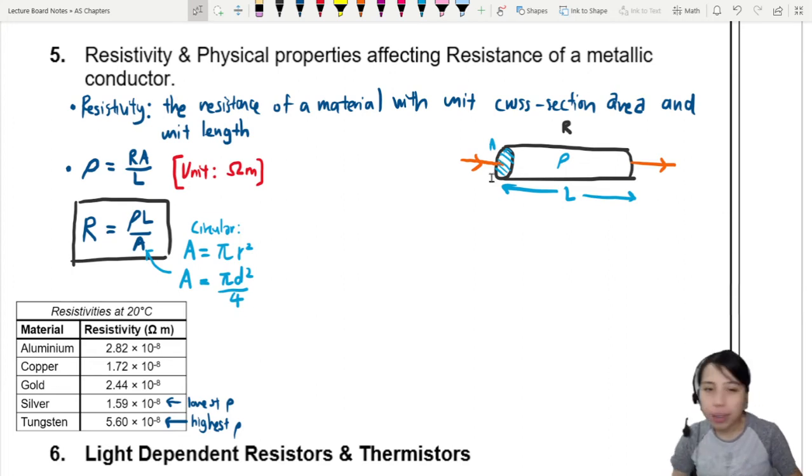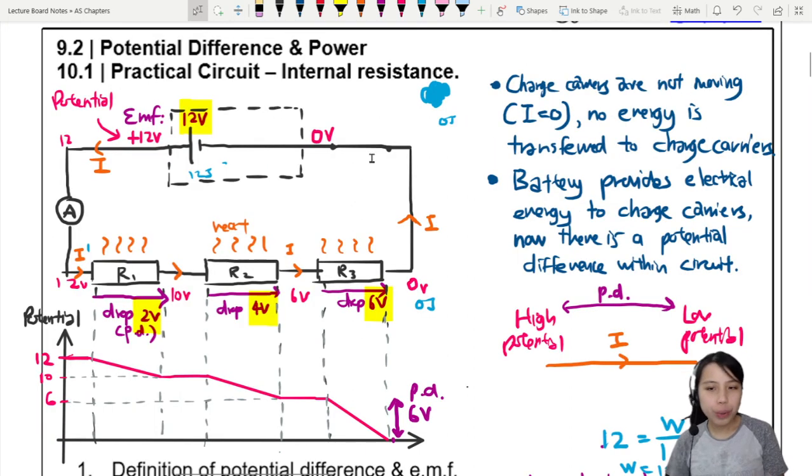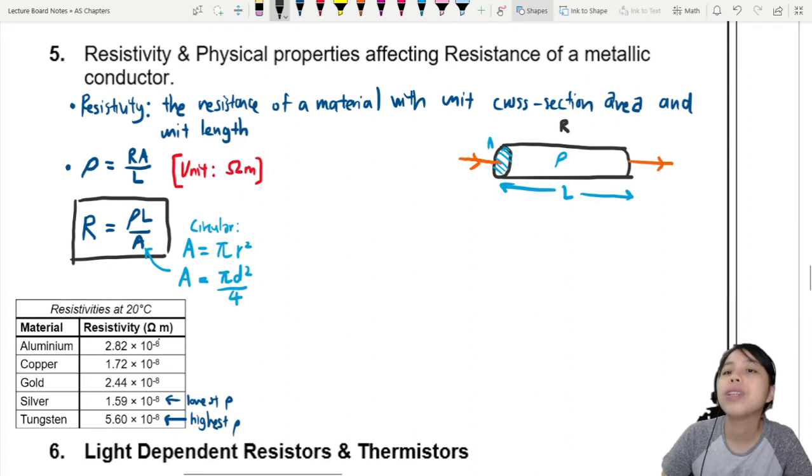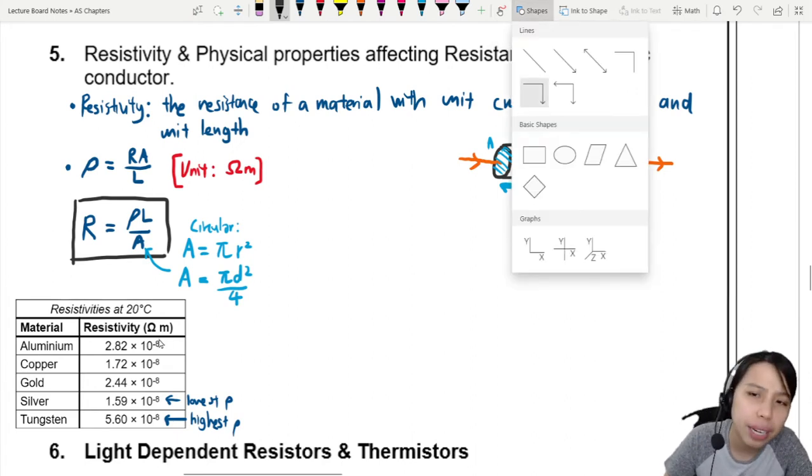One last thing to add on is remember once upon a time when we looked at potential difference, we drew this graph. If you forgot go and rewatch. And if you are wondering why when we go across a resistor the potential will drop like that linearly.